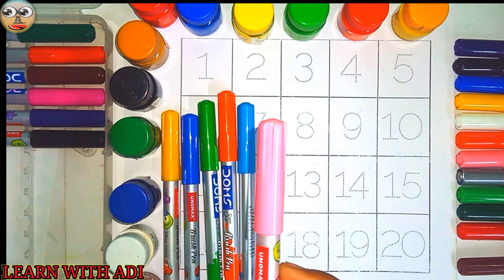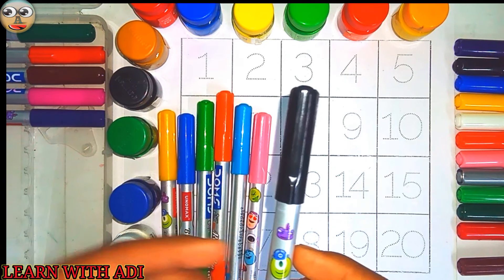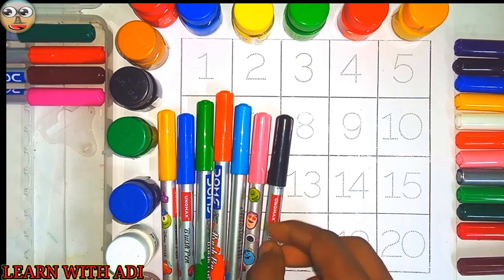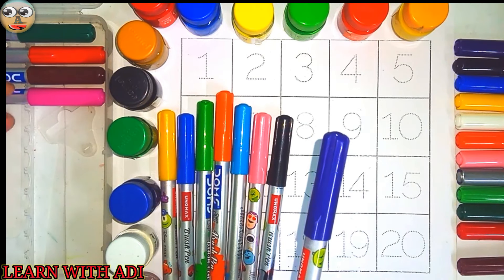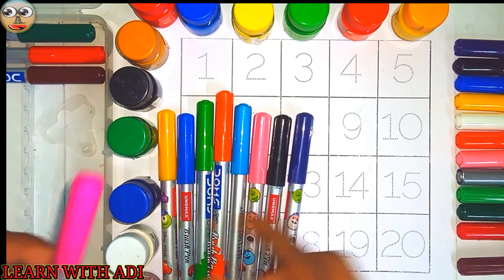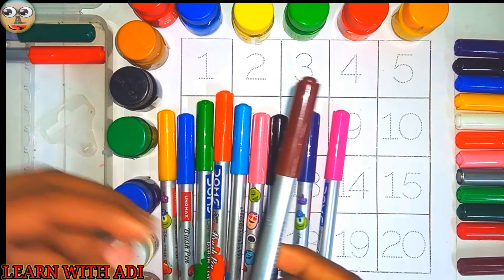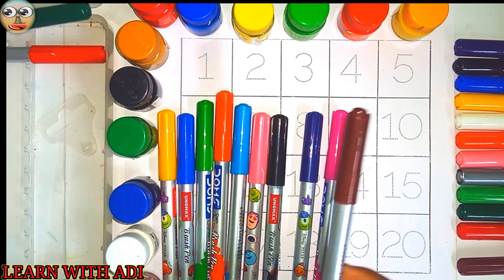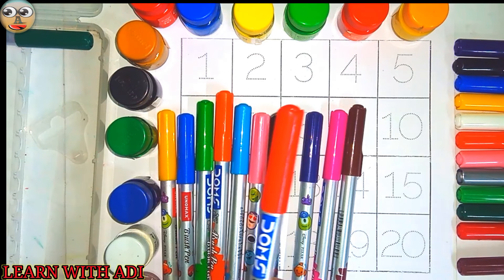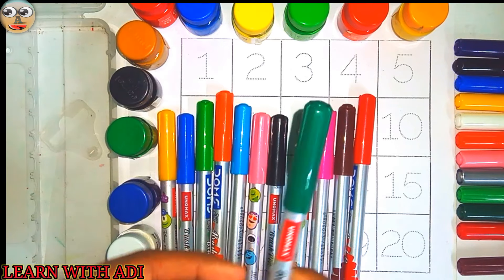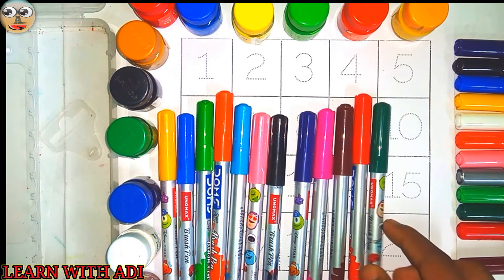This is sky blue color. This is pink color. This is brown color. This is red color. And this is dark green color.